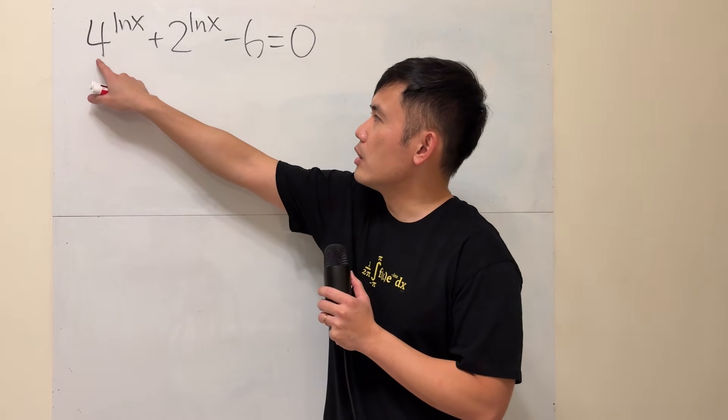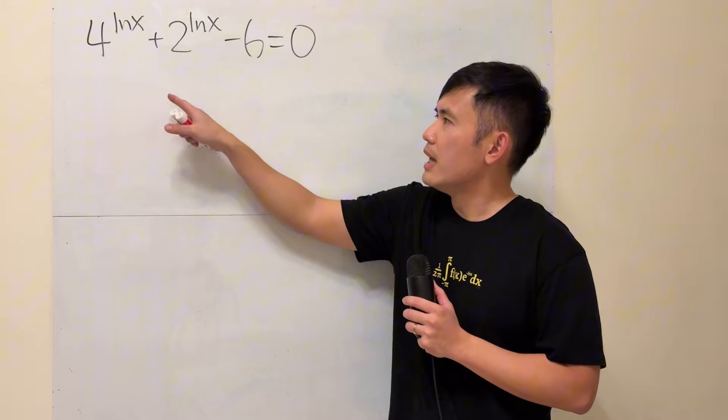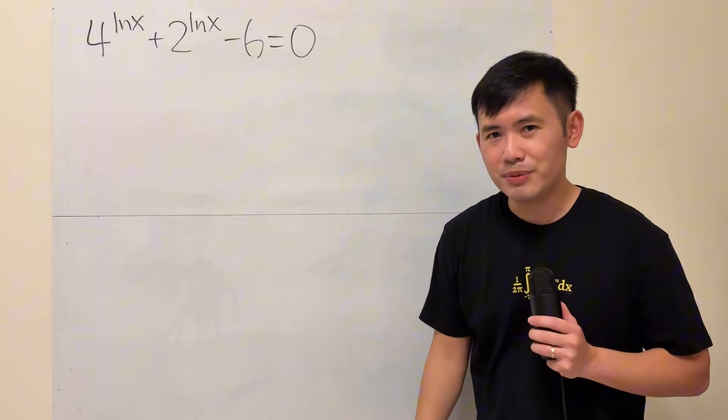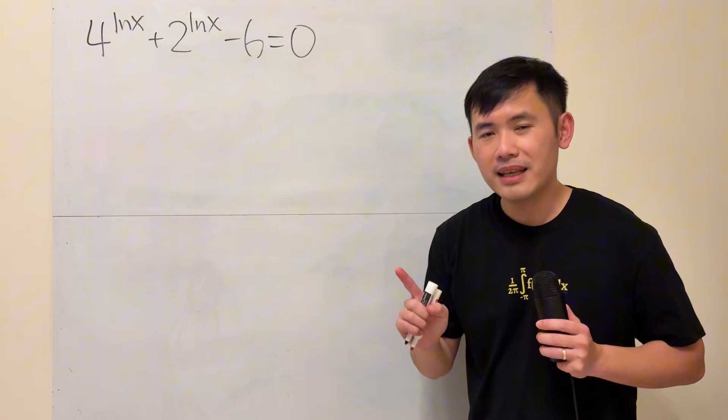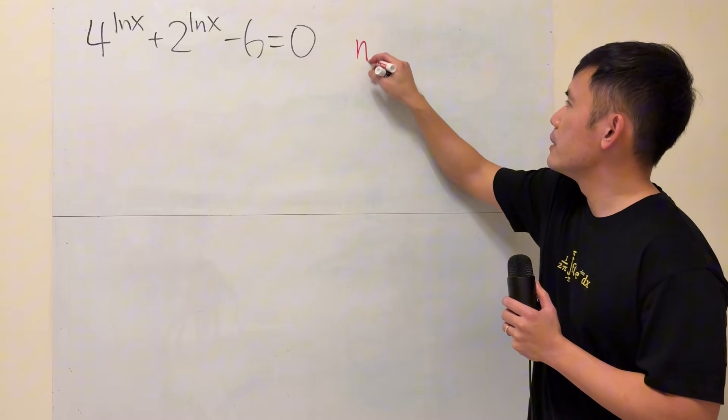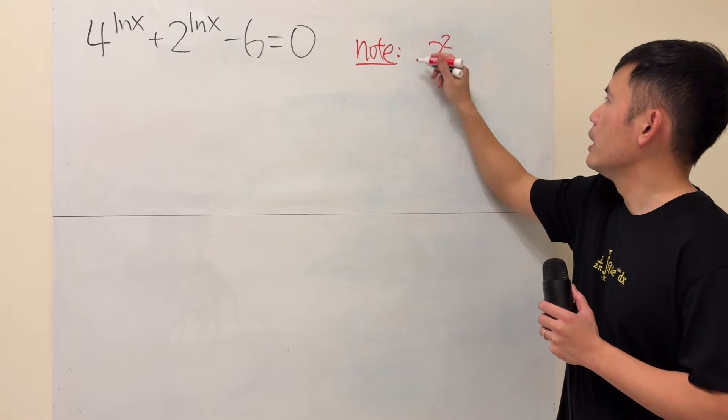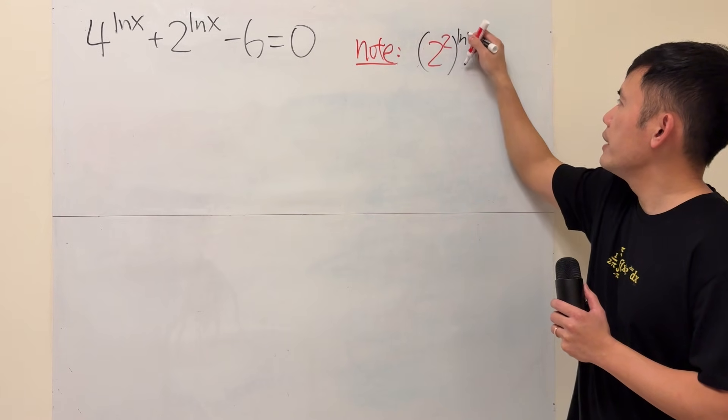The key is this term right here. We have 4 to the ln x power. And if you compare this and that, 4 and 2, that's suspicious. 4 is 2 to the second power. So I just want to write that down right here. Note, if you look at 4 as 2 to the second power, and then raise that to the ln x power,